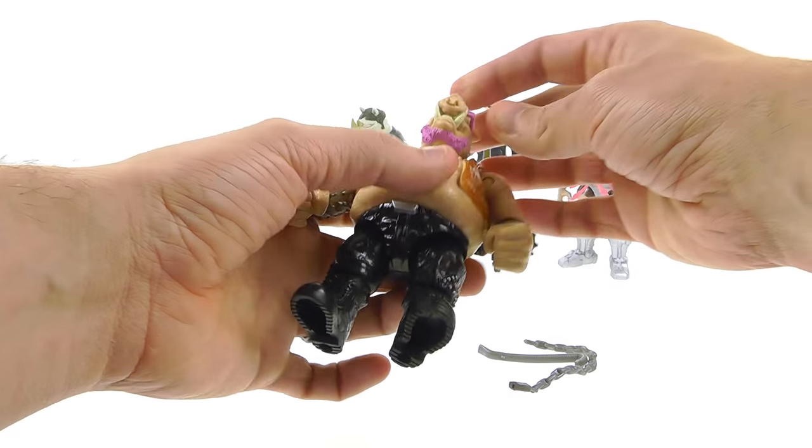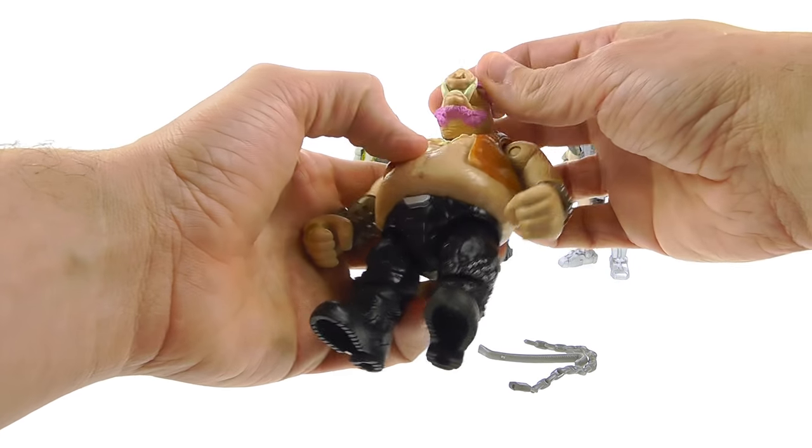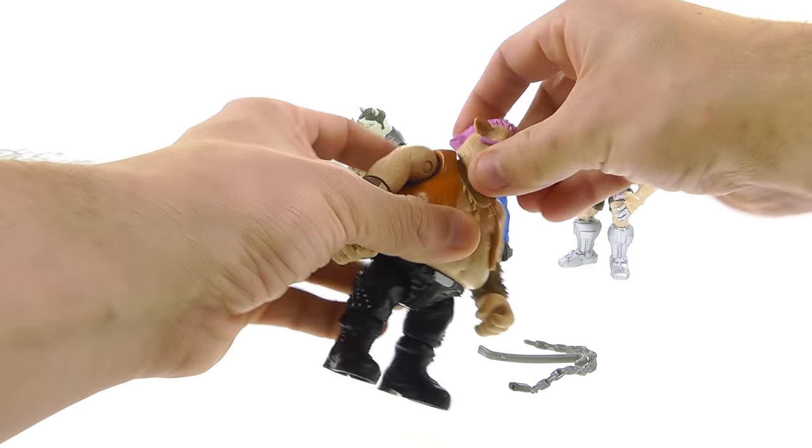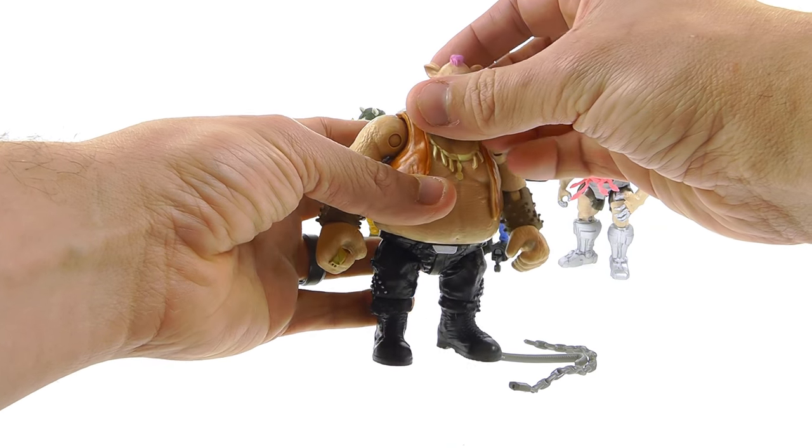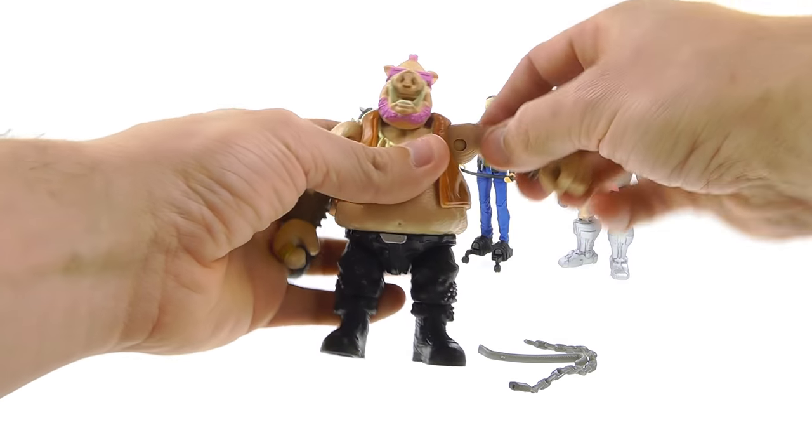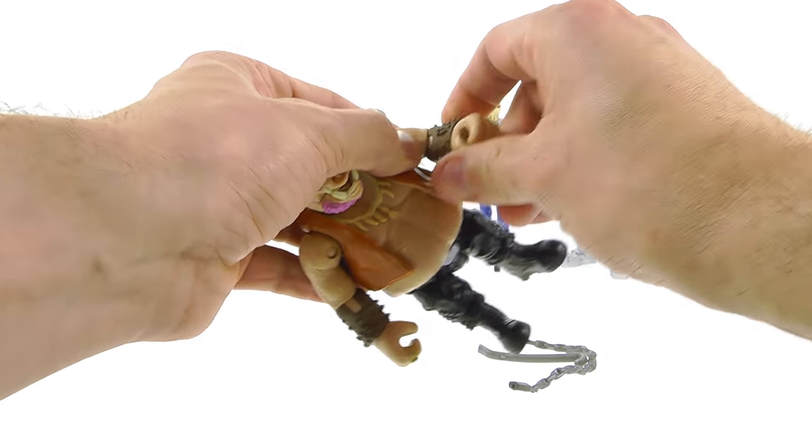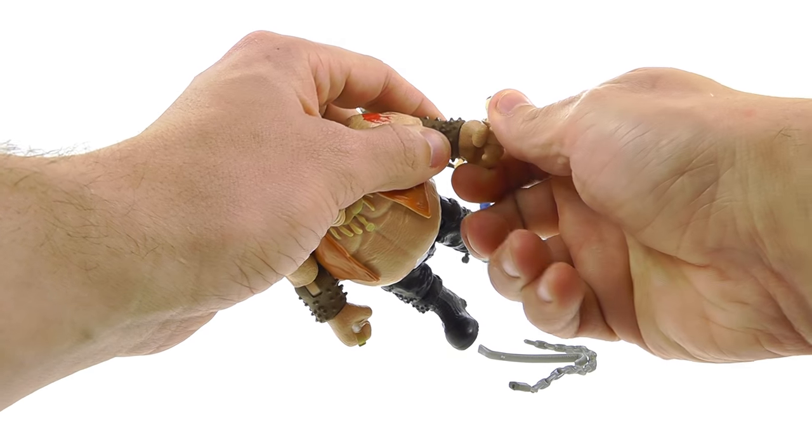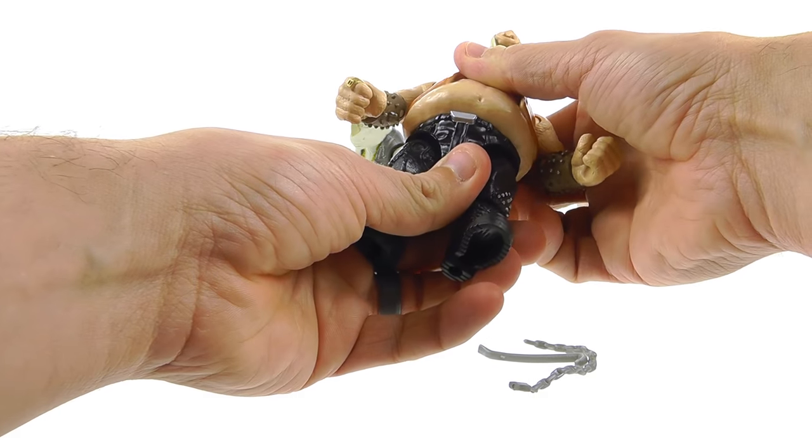Now for his articulation, the head is on a ball joint, but because of all the extra stuff around the side, you don't get too much motion. You can kind of get him emoting in different positions. You got the pin hinge joints that allow you to swing it up and down, rotate it all the way around. Same joint system here for the elbow, so you get a nice range of motion. He also does get waist articulation.